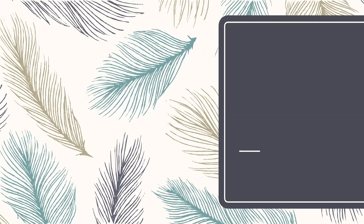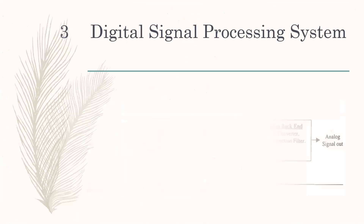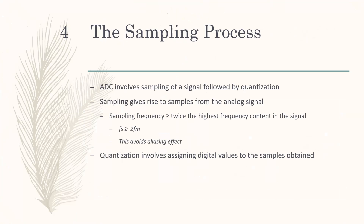In the previous session, we started with Module 1 in which we discussed concepts related to a digital signal processing system, including block diagrams. We then started with the sampling process. To get a digital signal from an analog input, we pass it through two processes: sampling and quantization. To proceed with sampling, we must satisfy the Nyquist criterion — that is, the sampling frequency FS must be greater than or equal to twice the maximum frequency present in the band-limited signal. This has to be done to avoid aliasing.